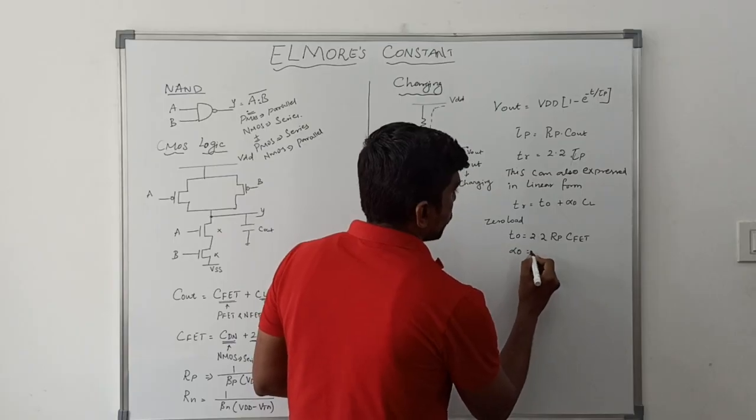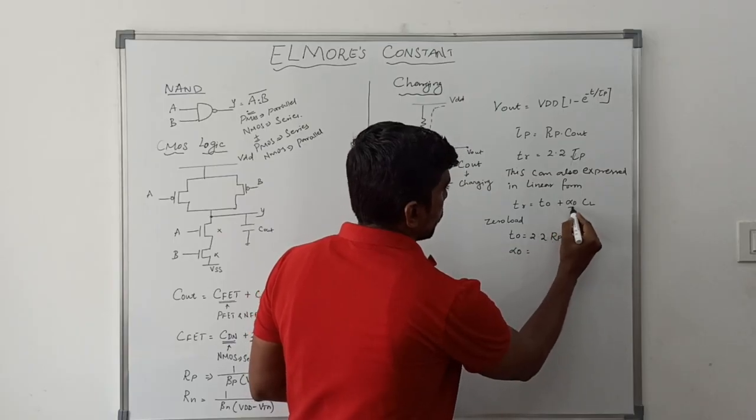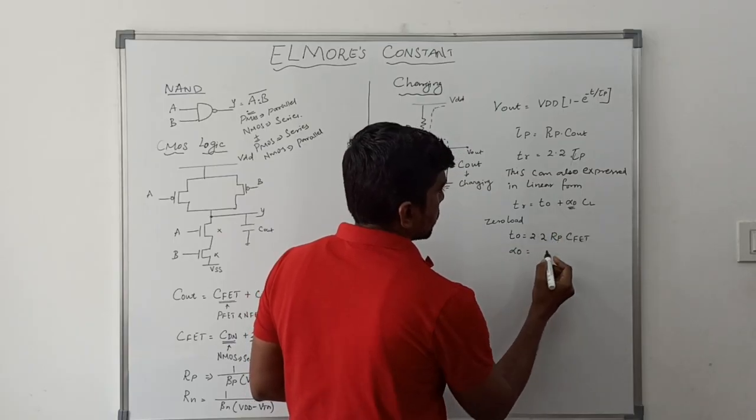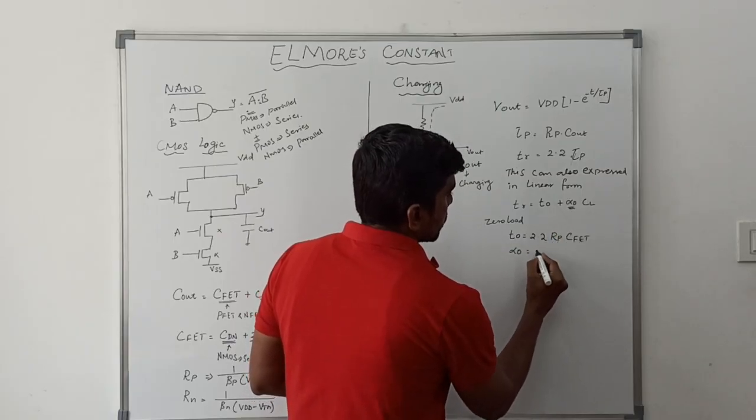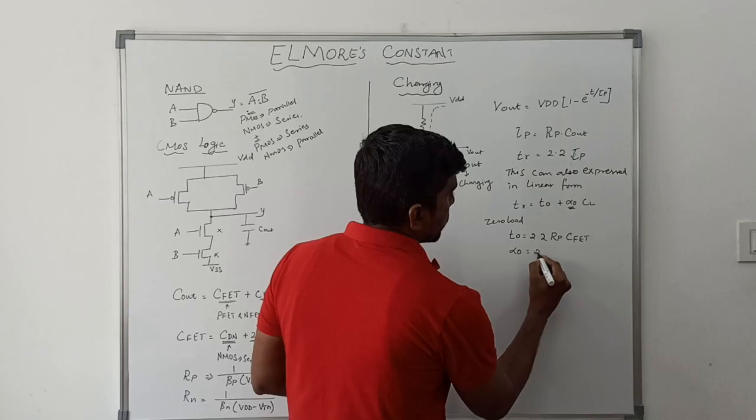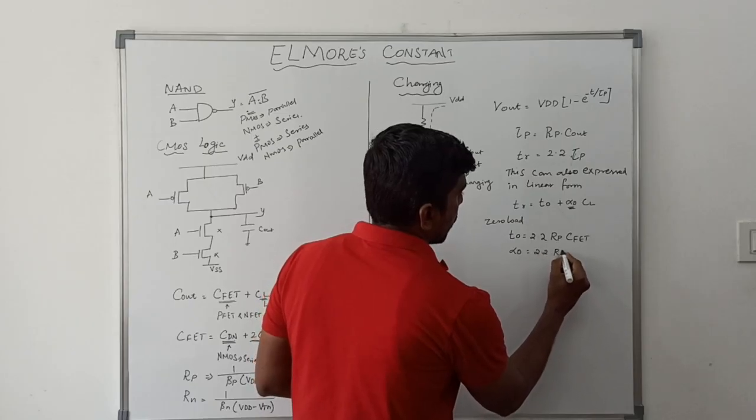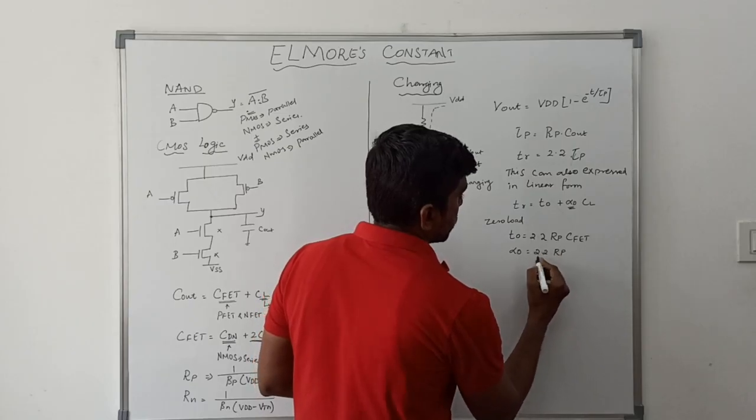Alpha α0 is the slope of time, with value α0 = 2.2 × RP.